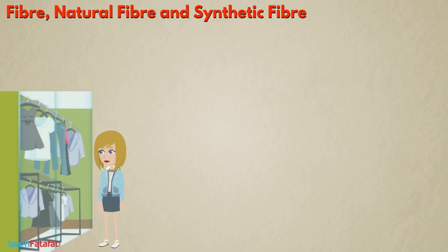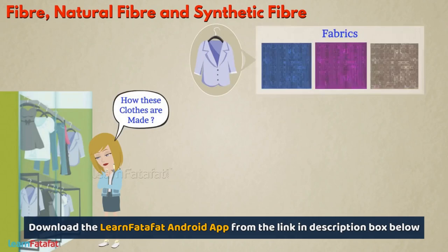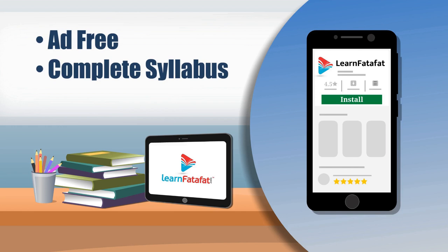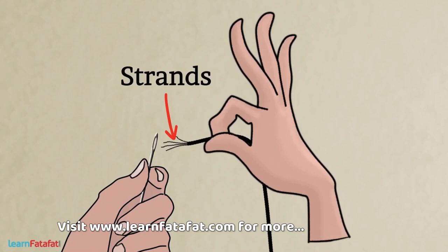You have a variety of dresses in your cupboard. Have you ever thought about where these clothes come from, or more specifically, how these clothes are made? The clothes are made of fabrics and fabrics are made from fibers. A fiber is basically a string made of some material. Have you ever tried to thread a needle? Sometimes the end of the thread is separated into a few thin strands. These thin strands are fibers.